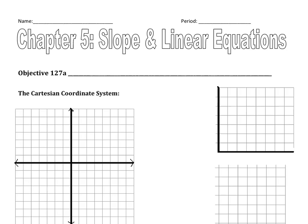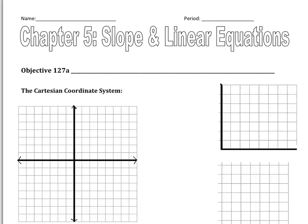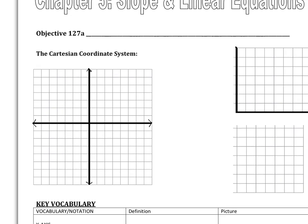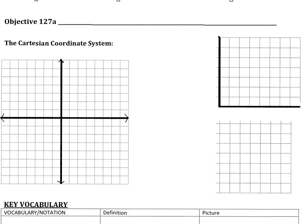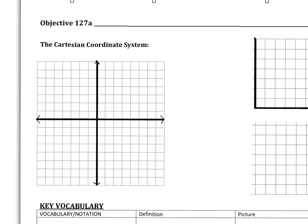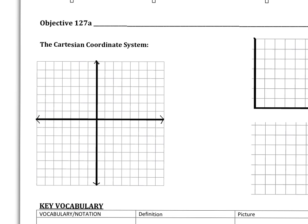Today we're going to be talking about the Cartesian coordinate system, which is basically the system we use to graph points with an x and a y axis. What we want to do first is label all the different parts of the graph so you can see what's going on.